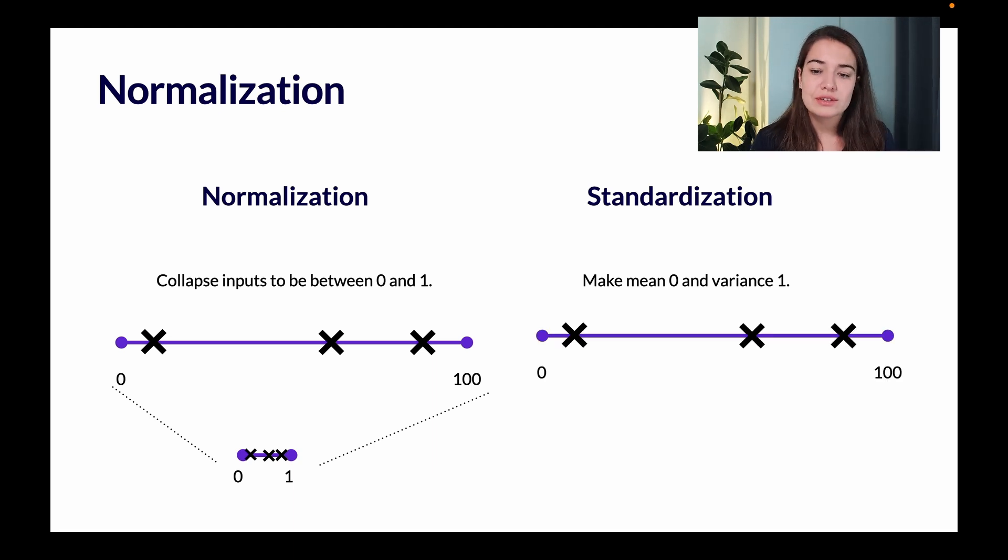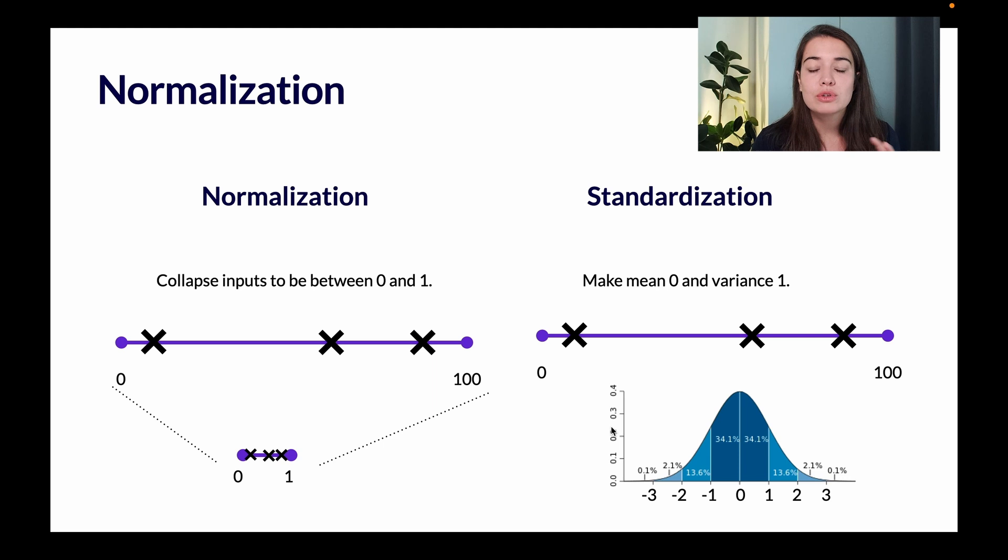Whereas for standardization, if we had something similar, at the end we're going to change these values so that when we put them in a distribution, their mean is going to be at zero and the most amount of values are going to be between minus one and one. And then as you go further in the distribution, you're going to see less and less of these values.